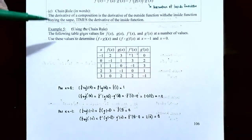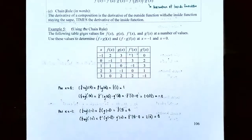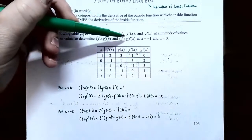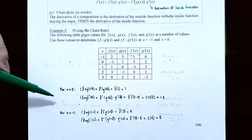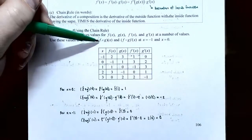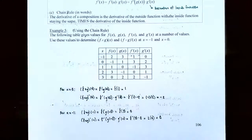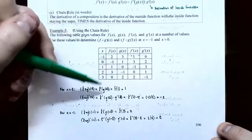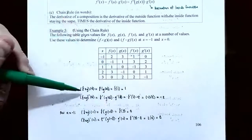Example five: using the chain rule with a table of values. The table gives values of f(x), g(x), f′(x), and g′(x). We need to find f∘g(x) and its derivative at x = 0 and x = −1. At x = 0: f∘g(0) = f(g(0)) = f(1) = 1. For the derivative, using the chain rule, (f∘g)′(0) = f′(g(0)) · g′(0) = f′(1) · 2 = (−1)(2) = −2.